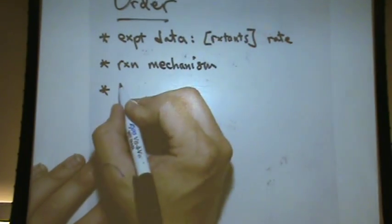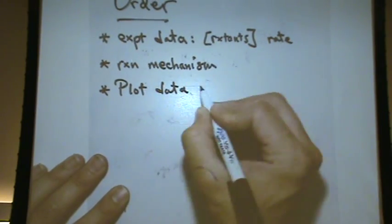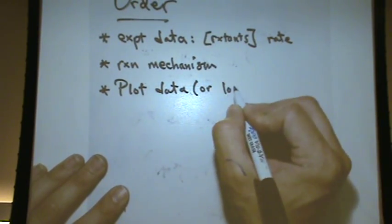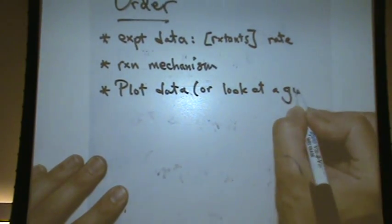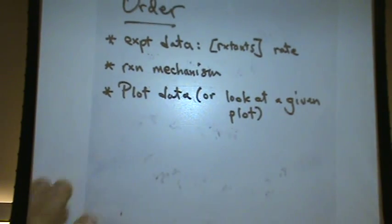Another way to find the order is to plot data, or look at a given plot. You're going to plot three potential plots if you're given data. The concentration of A versus time, the natural log of concentration versus time, and one over the concentration versus time. Whichever one gives you the line with the correct slope, that tells you the order of the reaction.